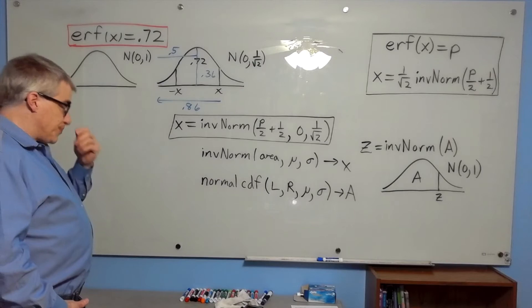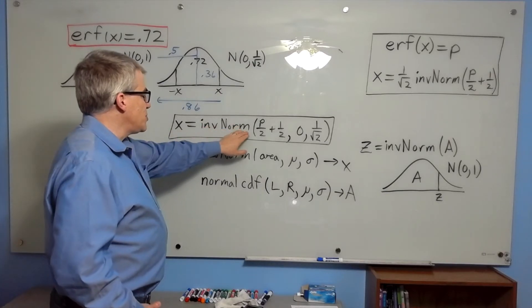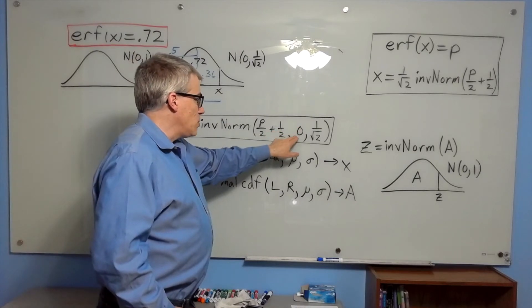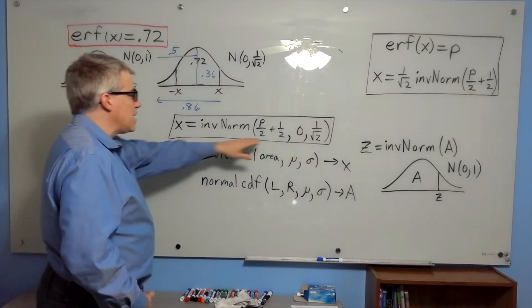So this is what we want to do. x equals inverse norm, p over 2 plus a half, 0, 1 over root 2. Why did I do that?